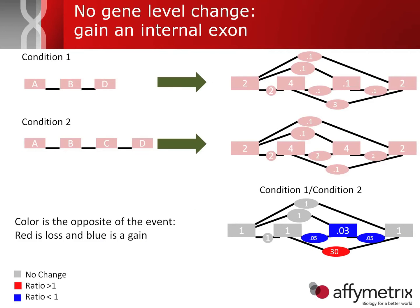Looking at an example where there is no gene-level change between condition one and condition two: we have three exons A, B, and D in condition one, and A, B, C, and D in condition two, with arbitrary expression values assigned. When we do a simple condition one over condition two fold change, we see a ratio less than one for exon C — highlighted in blue — meaning it has gone from little or no expression in condition one to a large amount in condition two. For the overhead probeset, the color is the opposite of the event: red indicates a loss and blue indicates a gain.